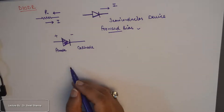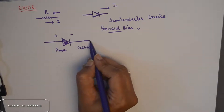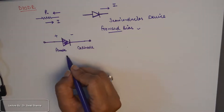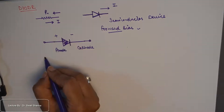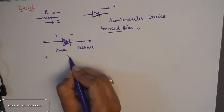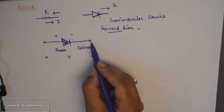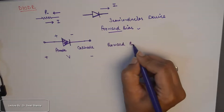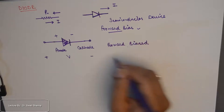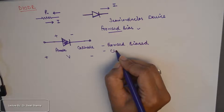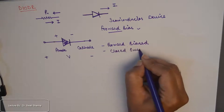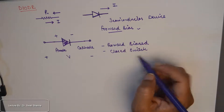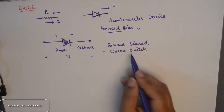If I connect a voltage across the diode such that the positive terminal is connected with the anode and the negative terminal of the battery is connected with the cathode, then this diode is said to be forward biased and it behaves like a closed switch. When it behaves like a closed switch, it simply allows the flow of current through it.